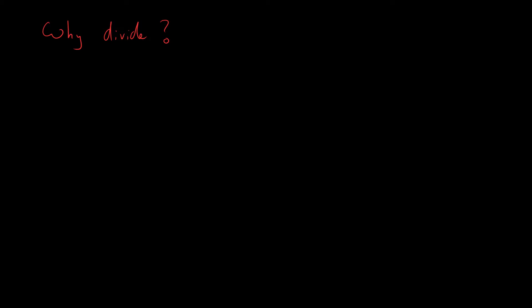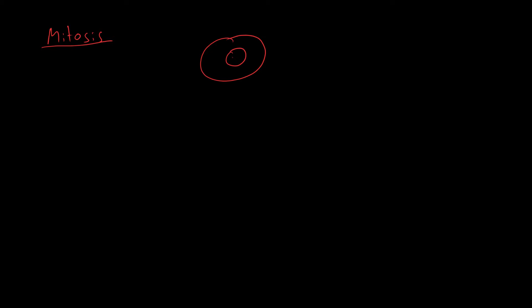There are two types of cell division: meiosis and mitosis. The first we're going to discuss is mitosis, because we all need to know this. If you have a cell with a nucleus containing chromosomes — which are packages of DNA — and if you divide by mitosis, you will end up with two cells which are identical to the original one. They are genetically identical.